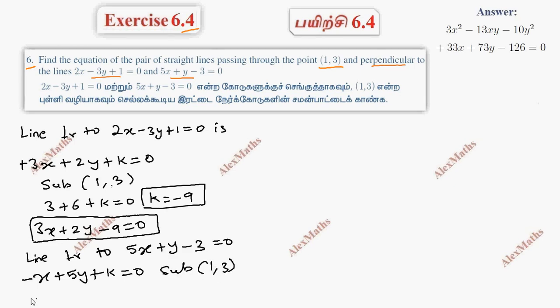This gives x minus 5y plus k equals 0. Substituting the point, we get k value equals minus 14. Substituting this k value, the equation is minus x plus 5y minus 14 equals 0.